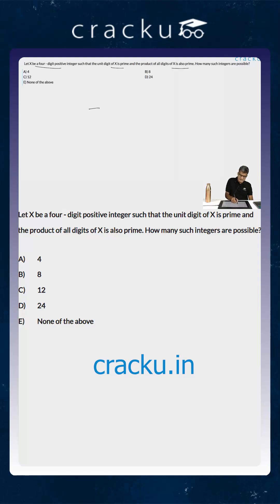Let us assume that this is the four-digit number. We are told that the last digit is prime. So this is basically a prime number. Now the product of all the digits of x is also prime.